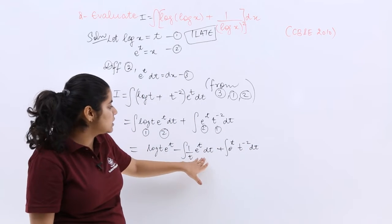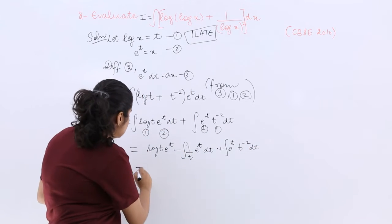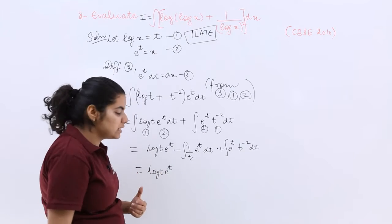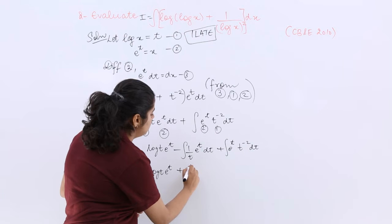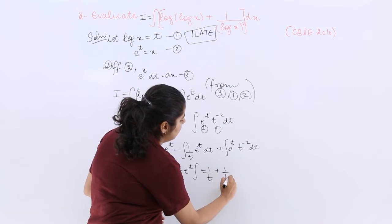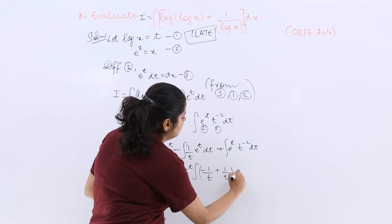Now you see that e raised to the power t is coming both ways. So we can treat it in some manner which will be easier for us. If I write plus e raised to the power t as common then it is minus 1 by t plus 1 by t square dt.